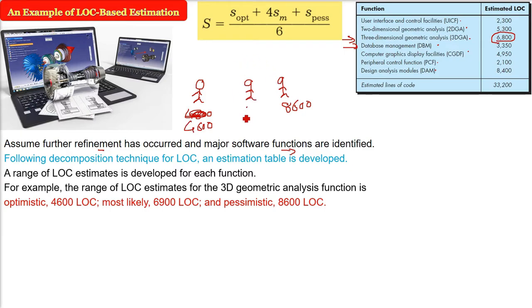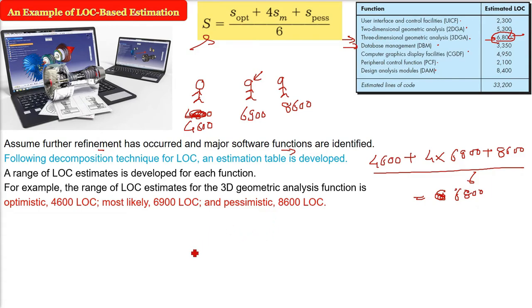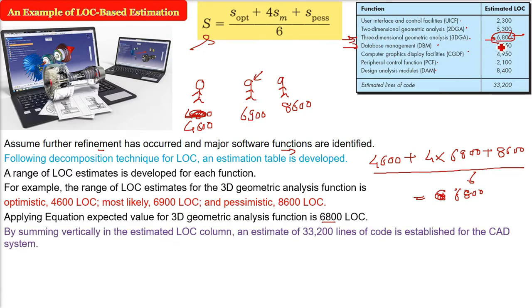Now what to do? We will use the three-point or the expected value estimation statistical result. We will use this 4,600, add it and then multiply 4 with 6,900 (the most likely), then add 8,600 with this one and divide it with 6. This is the final value. So we will use 6,800 value which you see in that table also. This is the estimated line of code and we will do this for each and every function listed in this table. By summing all these vertically, all this LOC column, when we add this, the total line of code which we are estimating is 33,200. So 33,200 lines of code we have to write.